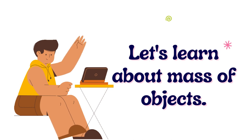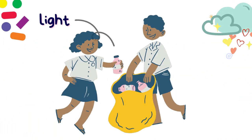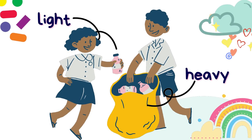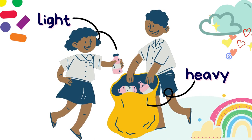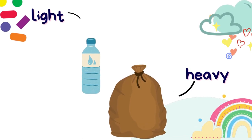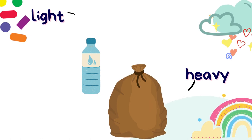Now let's learn about Mass of Objects. We're going to look at examples. Look at this picture — the girl and the boy. The girl is holding a bottle and the boy is holding a sack. Say with me: light, heavy. The bottle is light and the sack is heavy. Say it one more time: light, heavy. Well done.